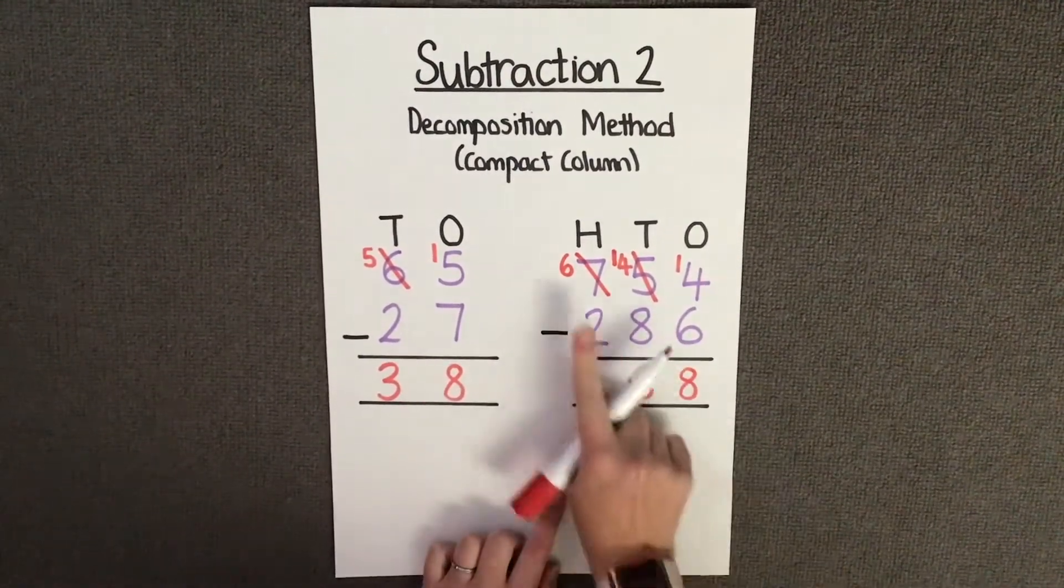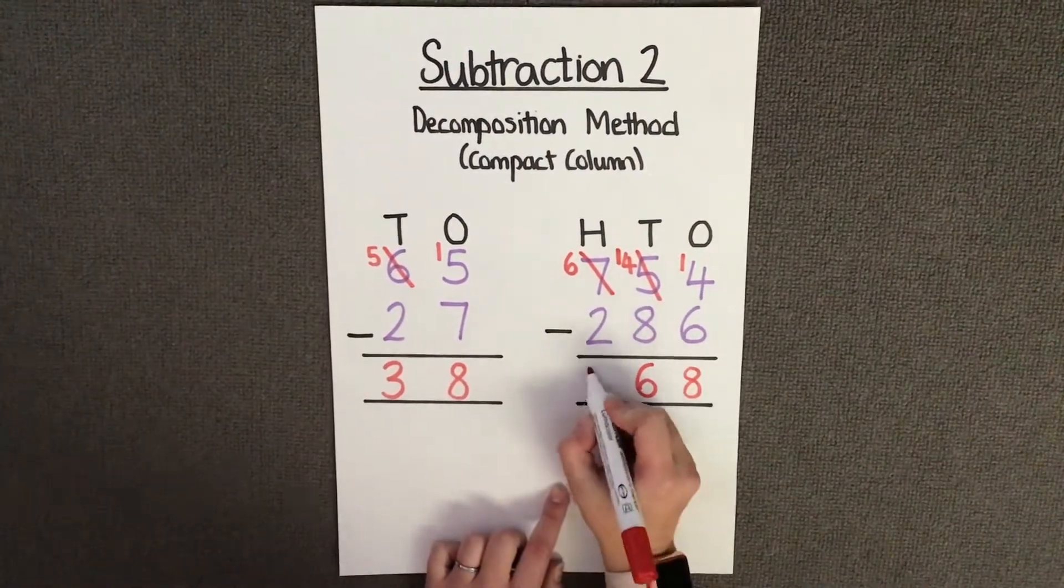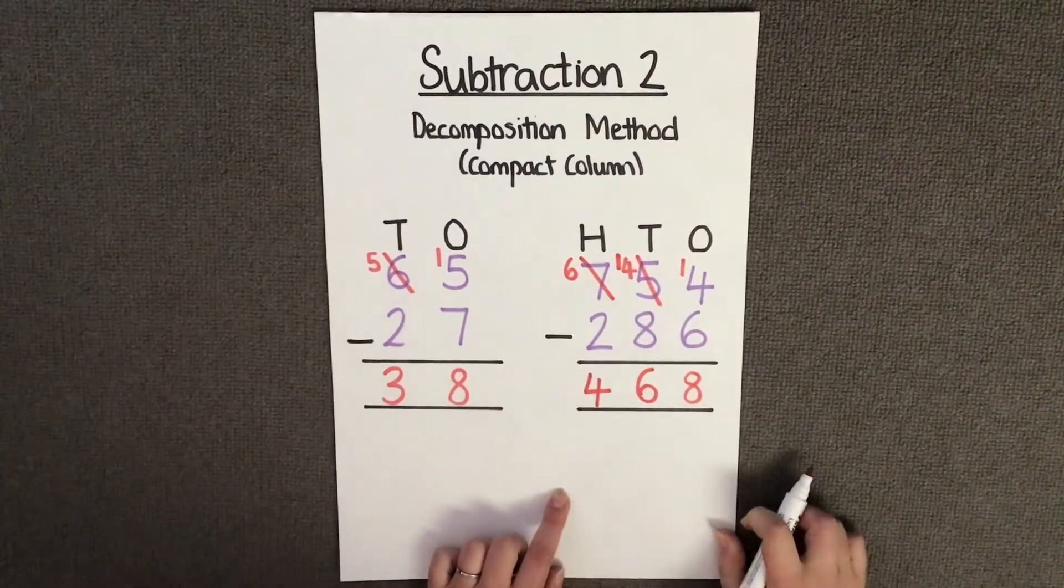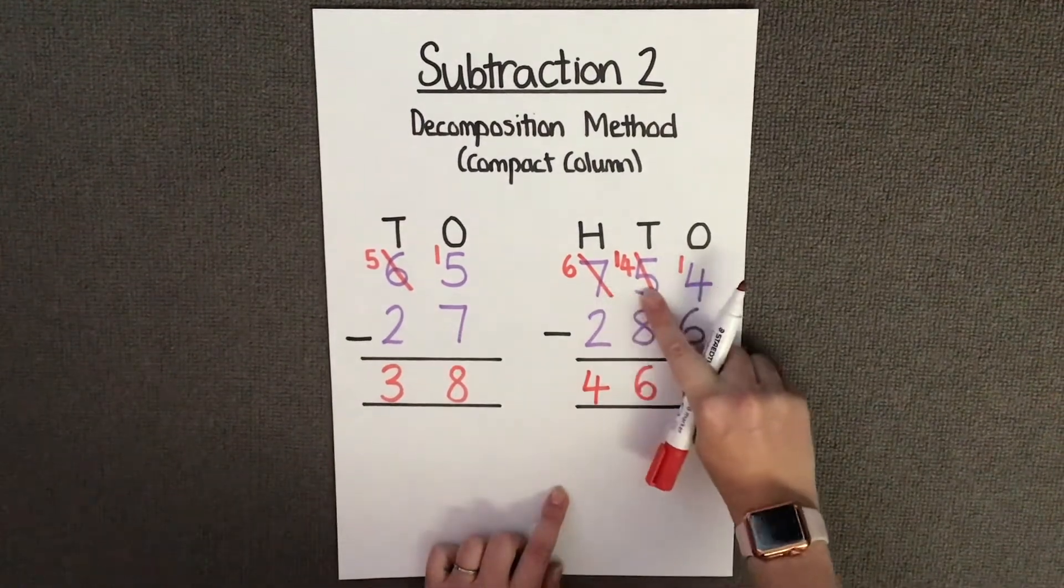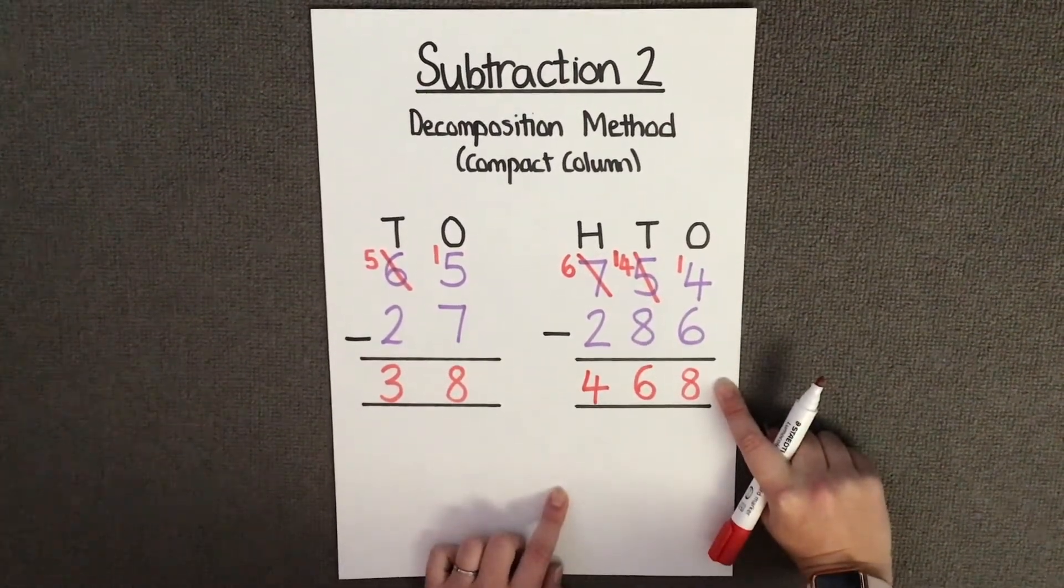And finally, I'm going to subtract my hundreds. 600 take away 200, which is 400. Therefore, the answer to 754 take away 286 equals 468.